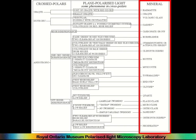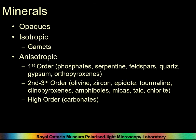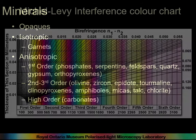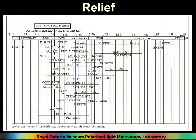This will get you accustomed to looking at a book about minerals in thin section and understanding what all those numbers mean. We have opaques, then isotropic minerals — basically garnets — and the anisotropic minerals. We'll start with first order, go to second, third order, and then the high order minerals, mostly carbonates. It might be useful to have a Michel-Lévy interference colour chart at your elbow, along with the relief chart for refractive index relationships.